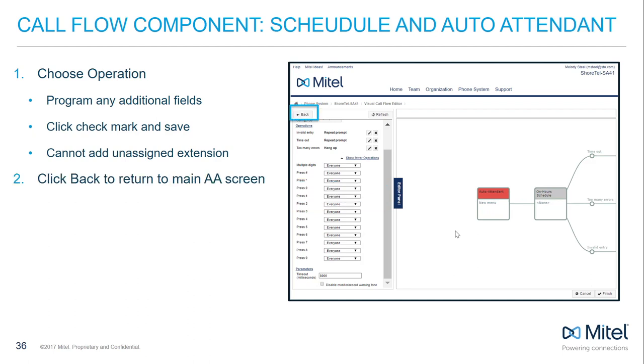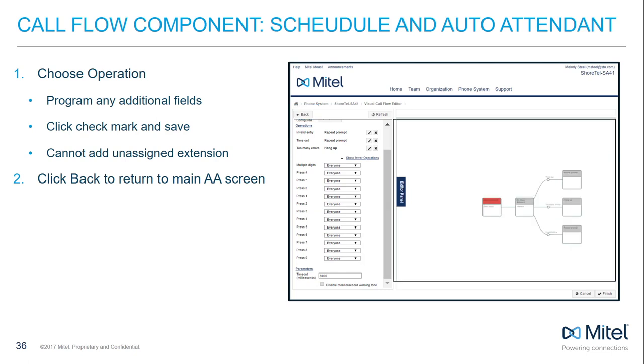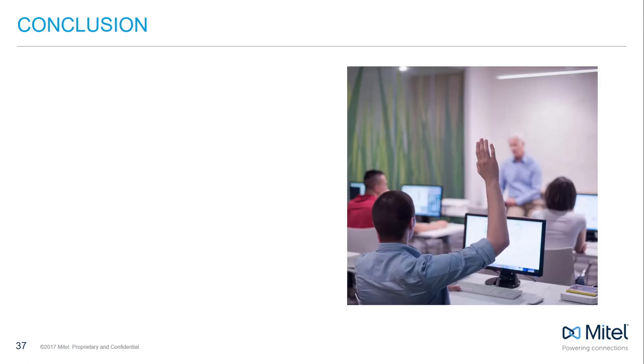Click Back to return to the main auto attendant screen. Remember you can see the call flow selection in the space to the right of the editor panel.